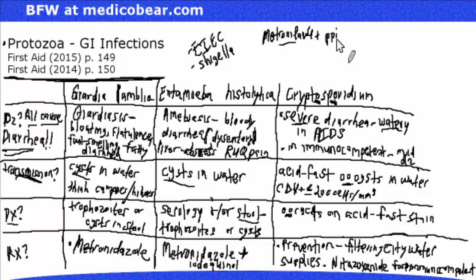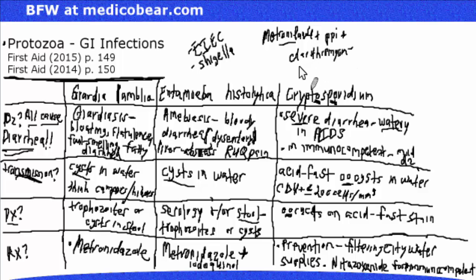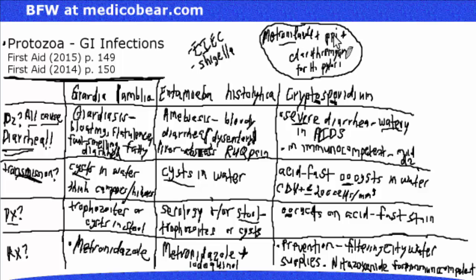Metronidazole combined with proton pump inhibitors — like omeprazole and other drugs ending in '-prazole' — plus clarithromycin forms triple therapy for H. pylori infection, where we see things like ulcers. So triple therapy is metronidazole plus a proton pump inhibitor plus clarithromycin for H. pylori.